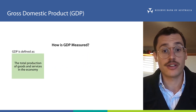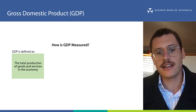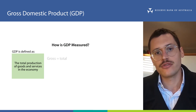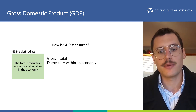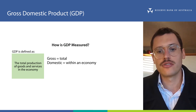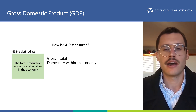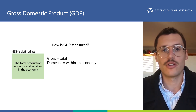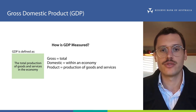GDP measures the total production of goods and services in the economy. Breaking down the name can help you to remember this. The G for gross means total. The D for domestic means within an economy. An economy is just a group of individuals, which we usually define by a geographic area — a state, a country, a group of countries, or even the whole world. And finally, the P for product means the production of goods and services.